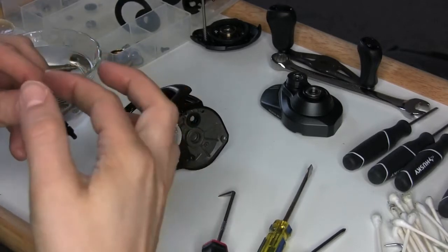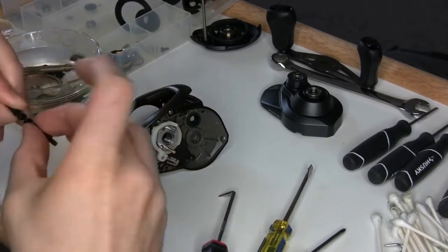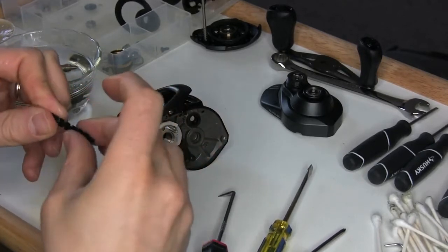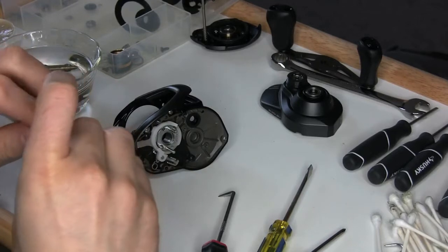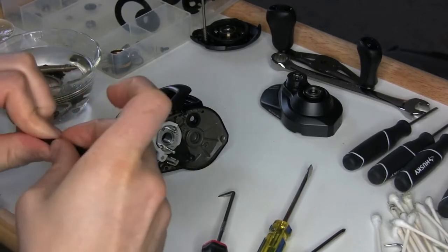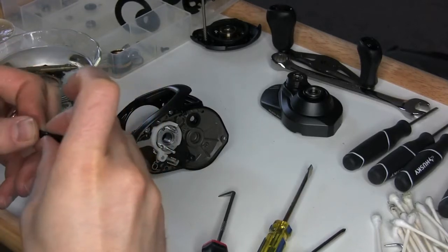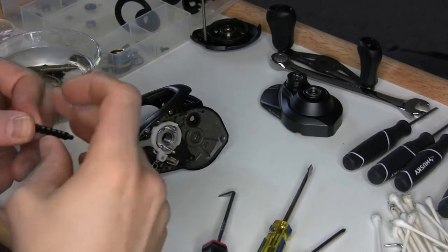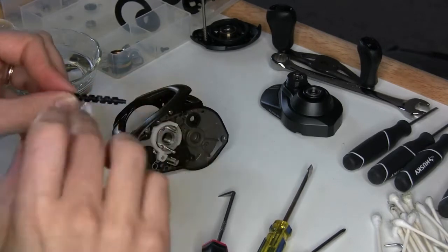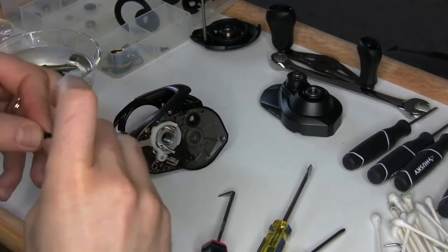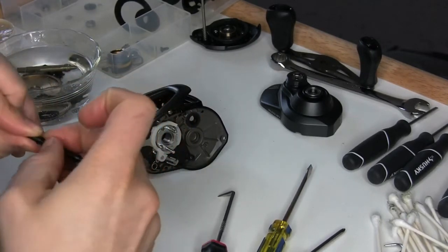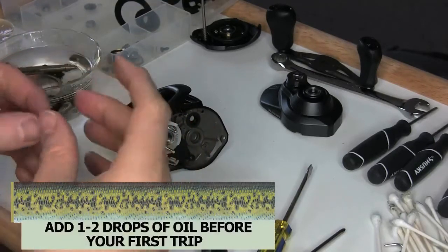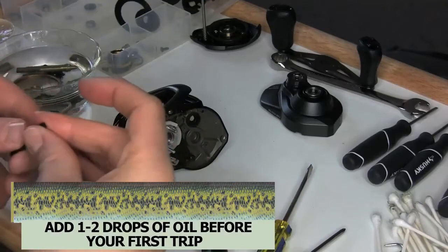This is not a part that is going to impact the smoothness of your reel much, if any at all. So you don't need to pack grease in there. If anything, you put too much grease in there, it attracts your dirt, and it will negatively impact the performance. So I just like to put a little dab on there and just rub it around. It ends a little bit, just to protect it.